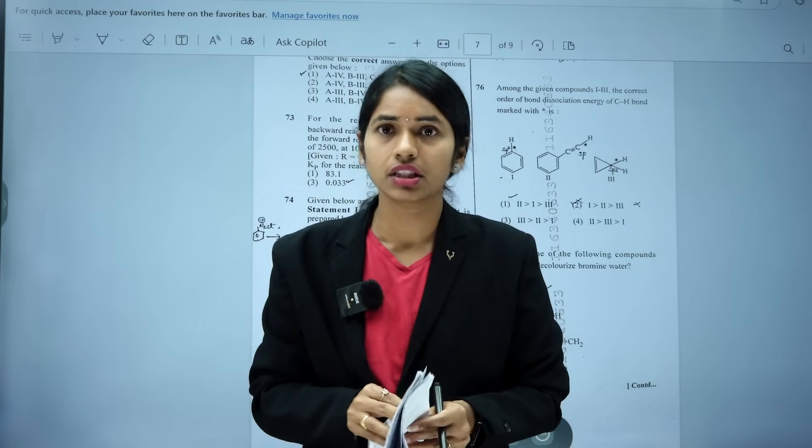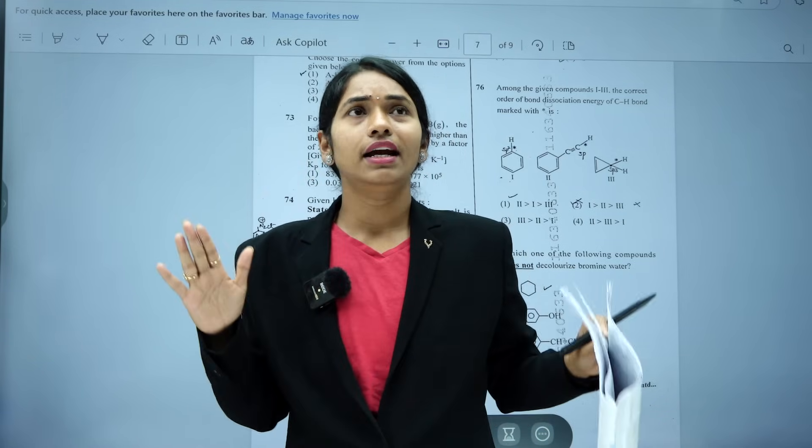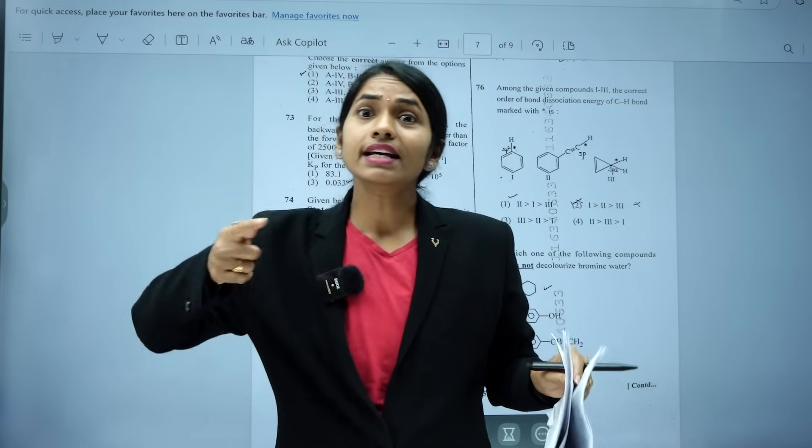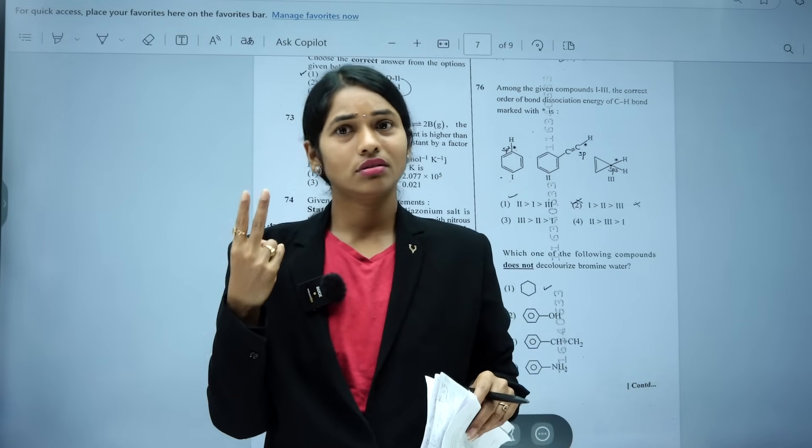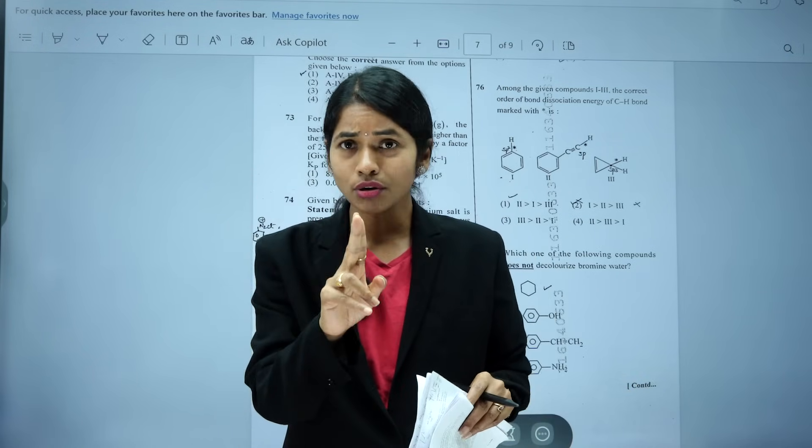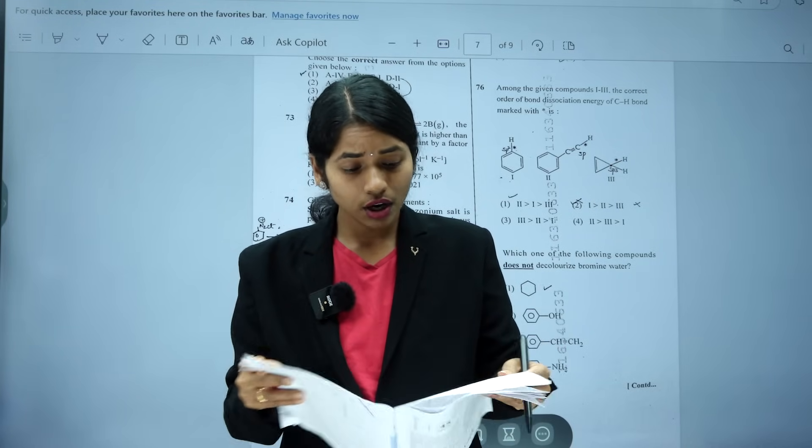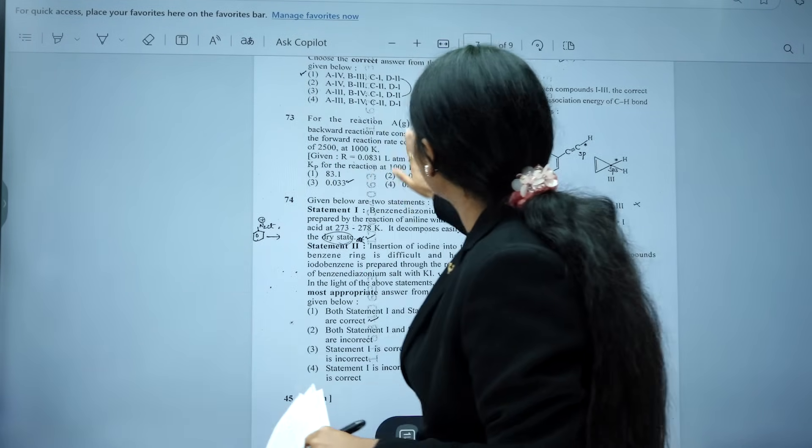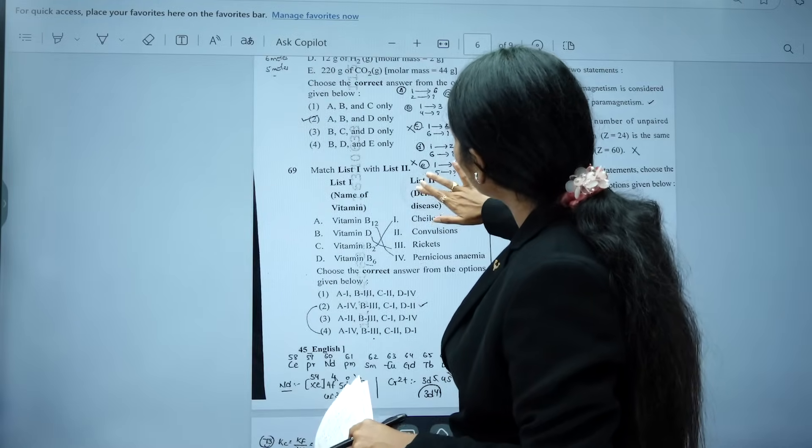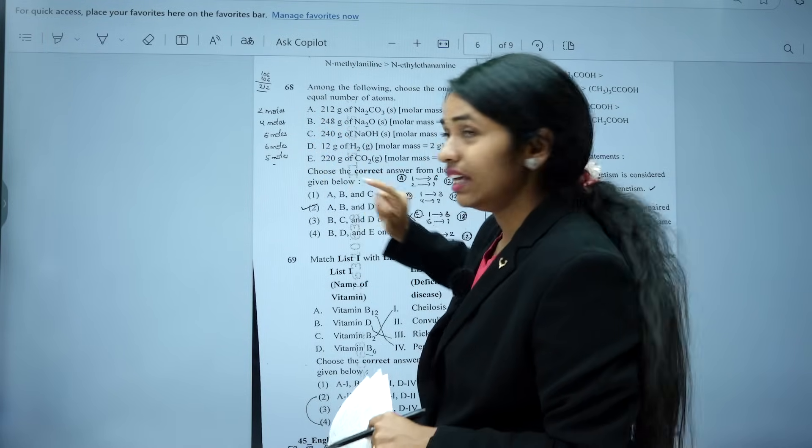And coming to atomic structure, you have given the question, radius energy. We are very happy that radius energy question came. Radius energy for lithium, again for helium. Two things students have to do. Again, one more mole concept question, question number 68, mole concept question. For A, B, C, D, E. So, A, B, C, D, E you have to do, again you have to calculate number of atoms. Easy question, but you have to do it in FASTA.